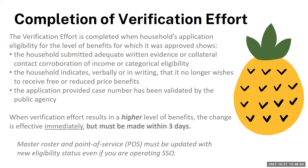Any changes to the eligibility status of the household application, whether an increase or decrease in benefit, requires the SAU or RA to send the notice of adverse action to the household. Please note that a letter of results is required to be sent even if there is no benefit change. Letter templates can be found on our website. If the verification results in a higher level of benefits, the change is effective immediately, but must be made within three days, and master rosters and point of service systems must be updated with the new eligibility status, even if you are operating SSO.